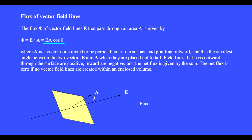The magnitude of the flux increases when the area increases, when the electric field increases in magnitude, or when the electric field is parallel to the area vector. This occurs when theta is zero and cosine theta equals one.